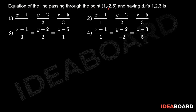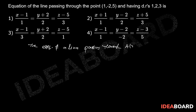Equation of the line passing through the point 1, minus 2, 5 and having direction ratios 1, 2, 3 is: We know that the equation of line passing through A,